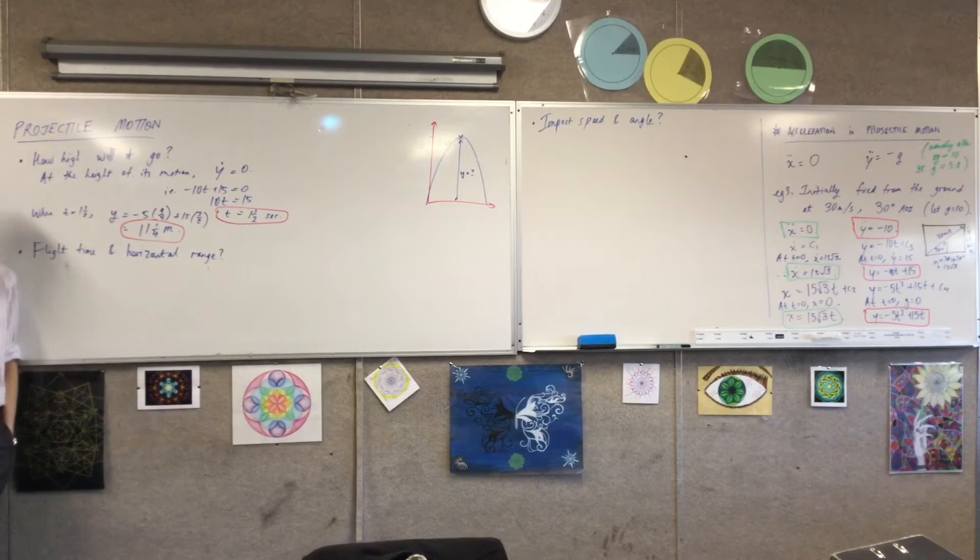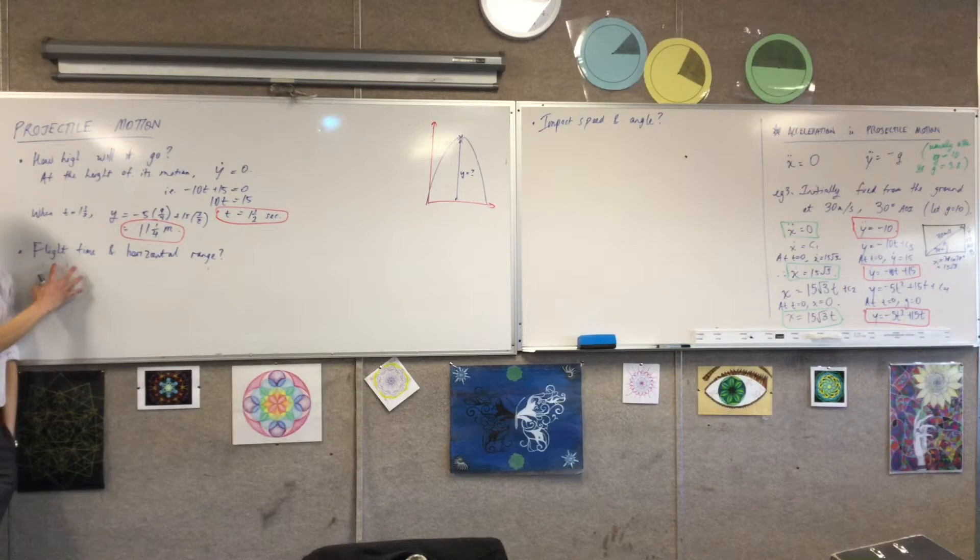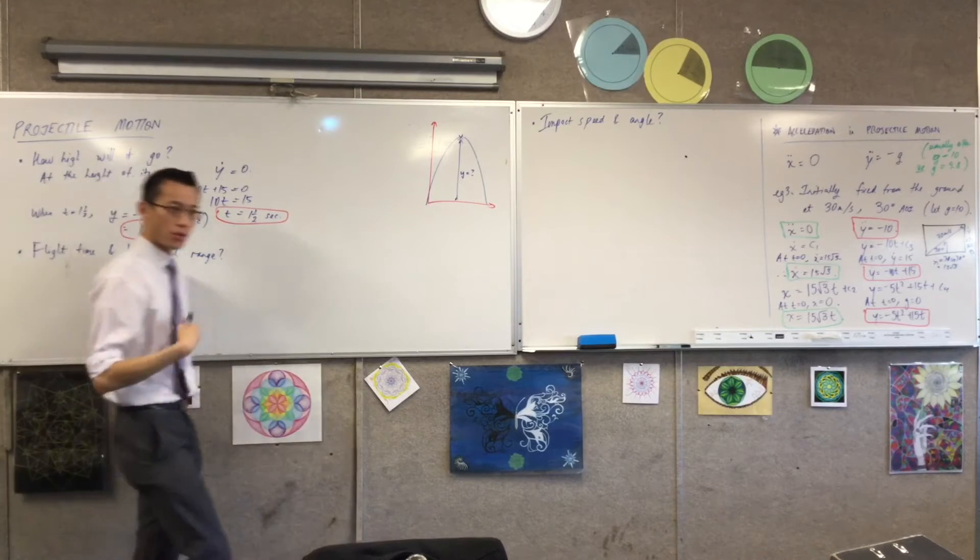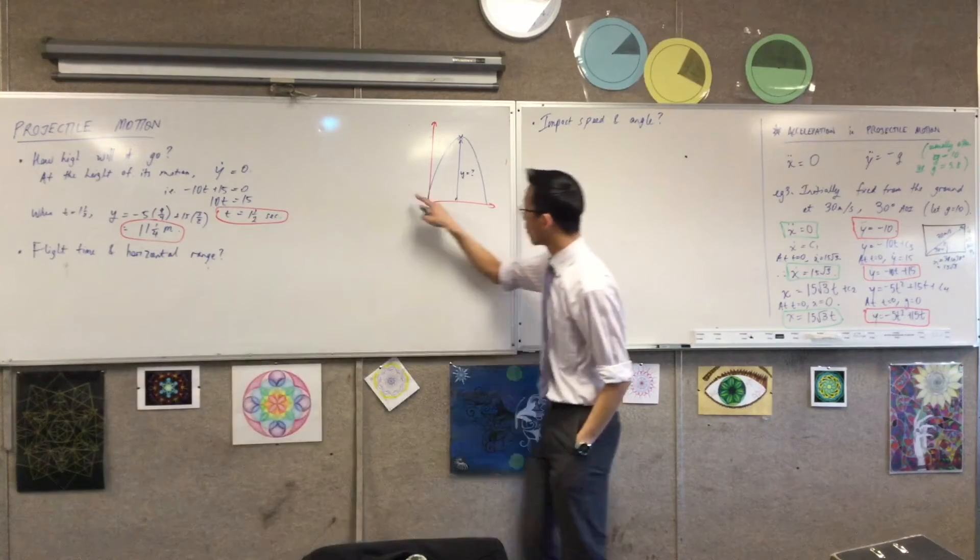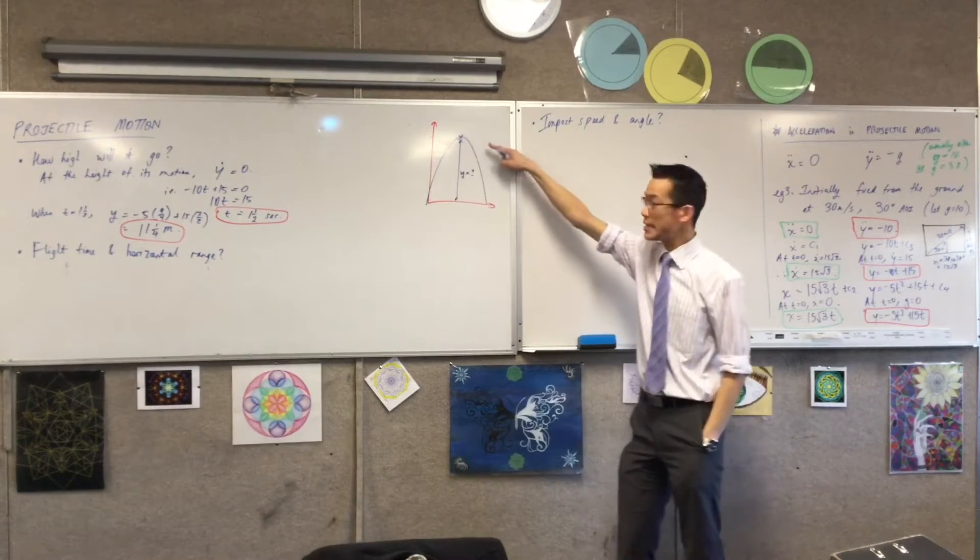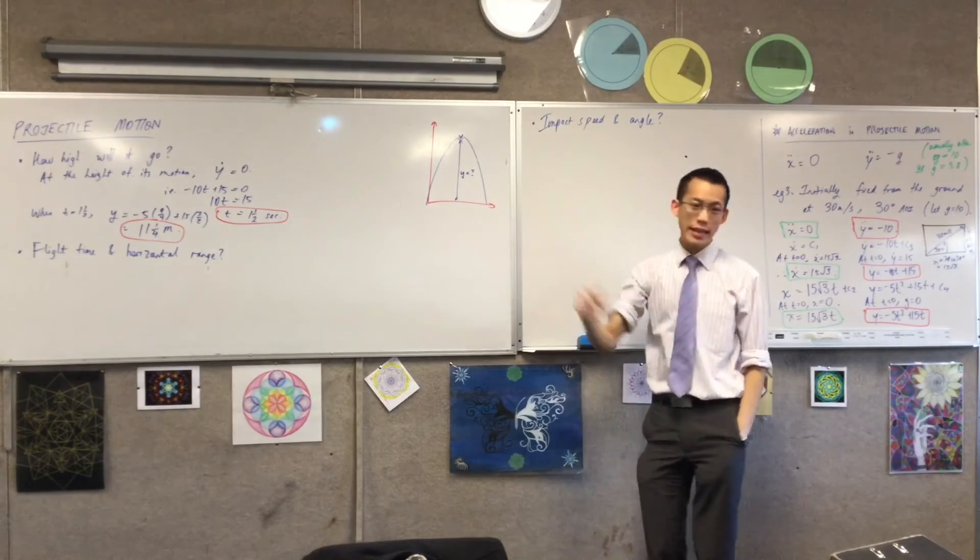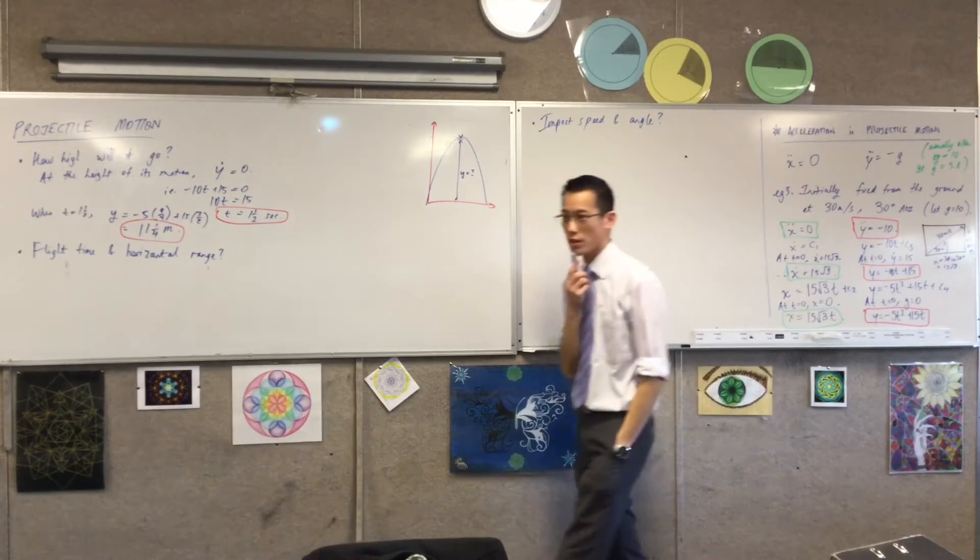Flight time and horizontal range are kind of paired together. What flight time needs is, what is the total amount of time that the object is actually flying? It's in the air. So again, come back to your six equations of motion.